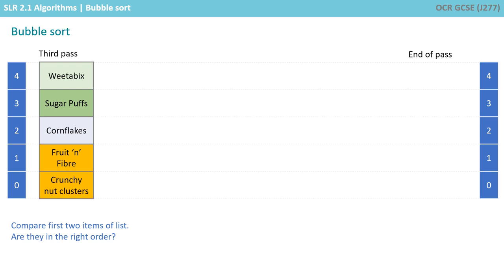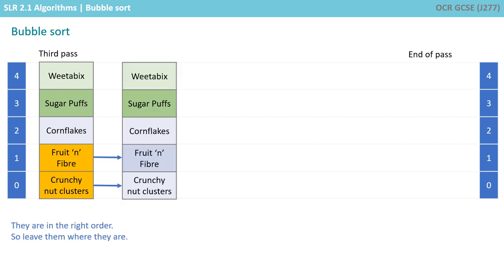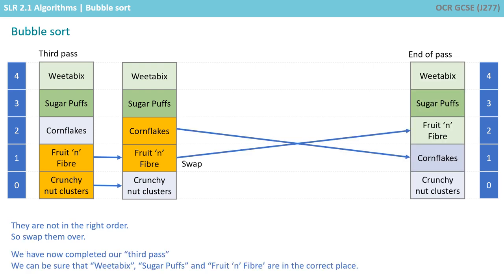We compare the first two items of the list: Fruit and Fibre and Crunch Nut Clusters. Are they in the right order? Well, they are in the right order, so we leave them where they are. We now compare the next two items: Cornflakes and Fruit and Fibre. Are they in the right order? They are not, so we swap them over.